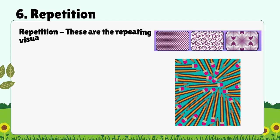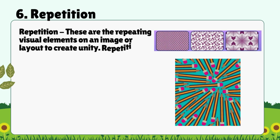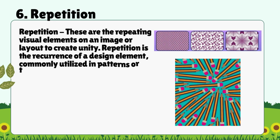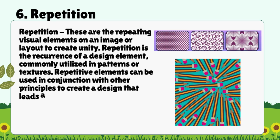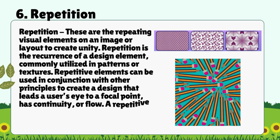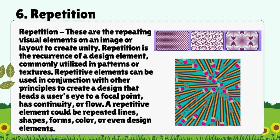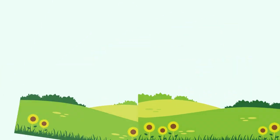6. Repetition: These are the repeating visual elements on an image or layout to create unity. Repetition is the recurrence of a design element, commonly utilized in patterns or textures. Repetitive elements can be used in conjunction with other principles to create a design that leads a user's eye to a focal point, has continuity, or flow. A repetitive element could be repeated lines, shapes, forms, color, or even design elements.